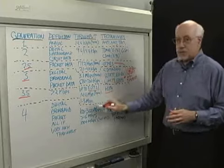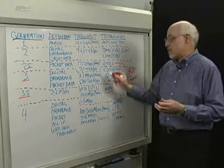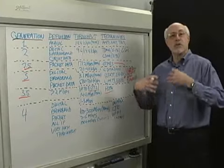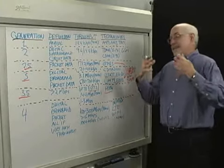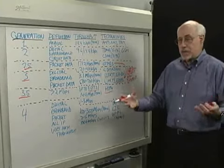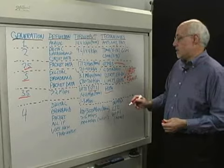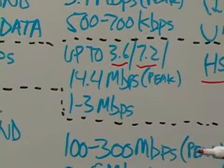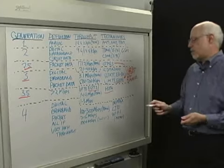You will not, in general, see those kinds of numbers. As is always the case, there's a big difference between peak and actual, based on loading, your distance from the cell, the phases of the moon. Radio propagation is a fairly difficult technology to explain. But you can expect that you'll be getting 1 to 3 megabits per second, something on that order, out of these technologies going forward. But that's not the end.